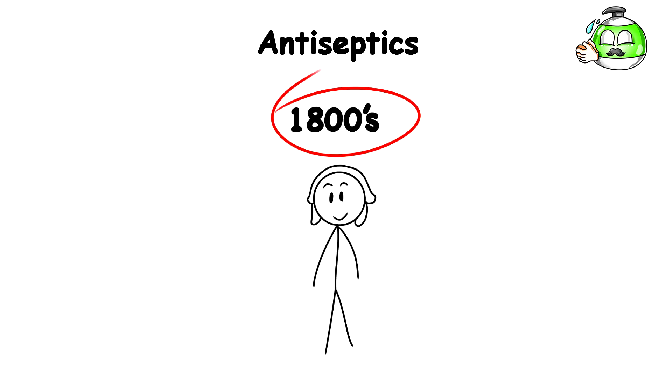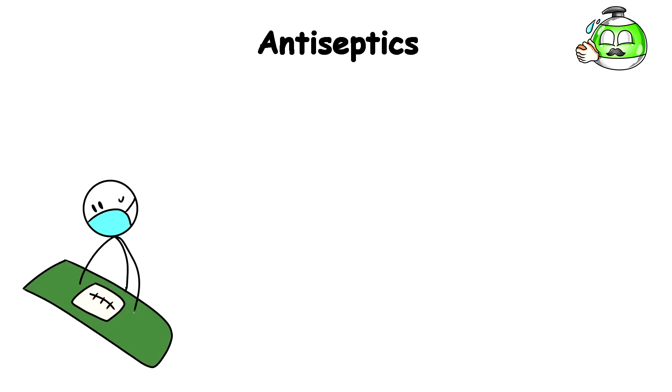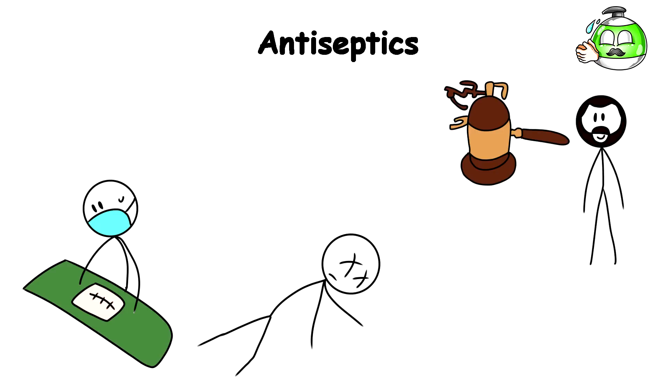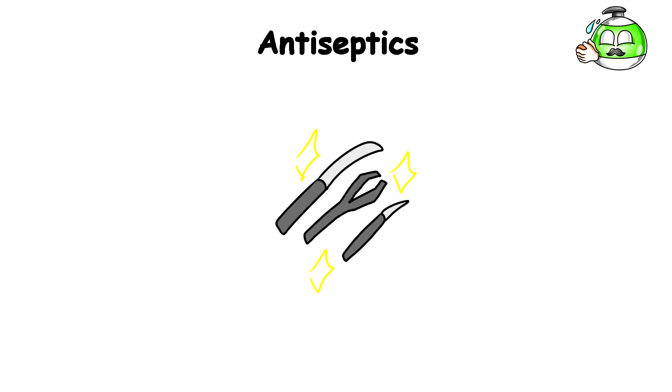In the 1800s, surgeon Joseph Lister in Glasgow, Scotland, confronted surgery's appallingly high death rates. Inspired by Louis Pasteur's germ theory, Lister used carbolic acid spray as an antiseptic in operating rooms to kill bacteria and demanded the tools be cleaned after every surgery. He also insisted on cleaning wounds the same way.